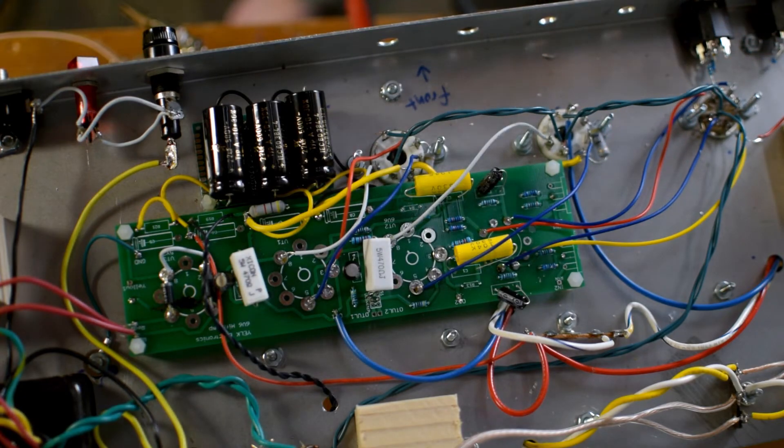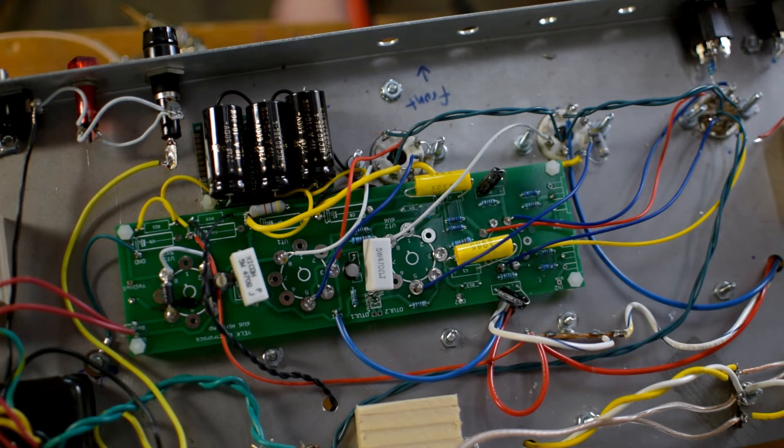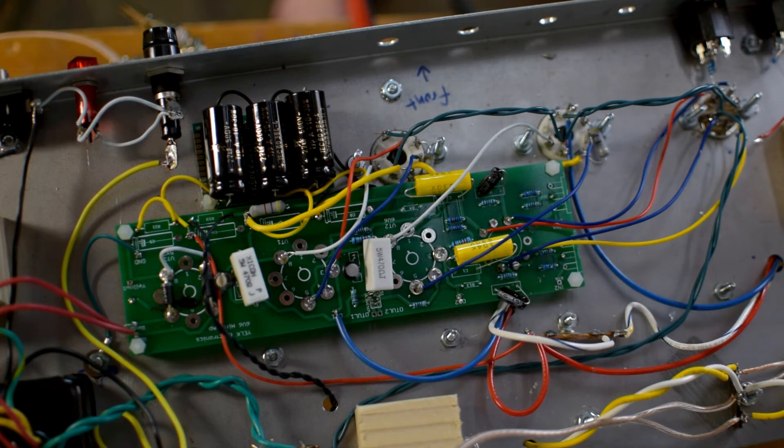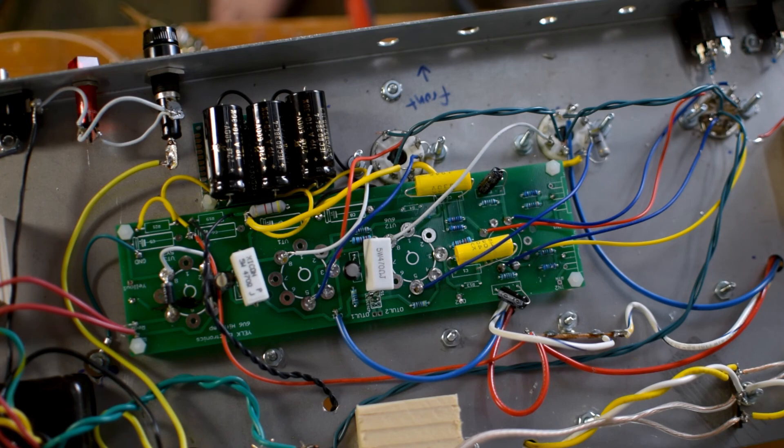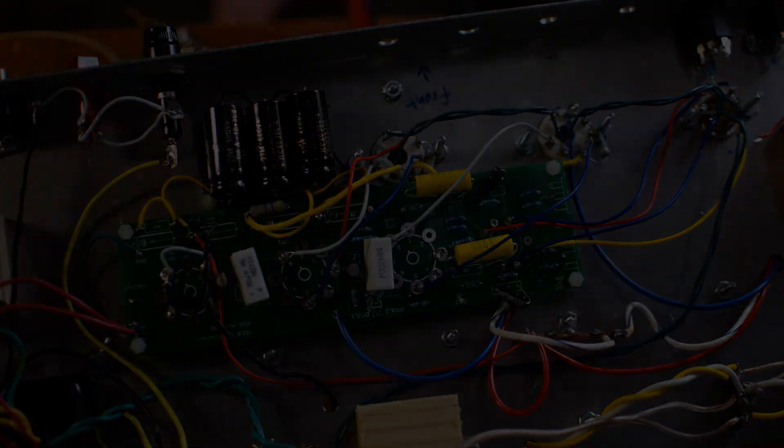While I'm here, I'm going to check my 6V6 pinout just to make sure that pin number 6 is blank and that pin number 4 is correct. Okay, this is telling me that pin 6 is no connection, that's good, and then pin 4 is the screen grid, that's correct, that's what I need. Okay, I think we should be all right. We're going to give this a shot, see how it goes. Fingers crossed, see you tomorrow.